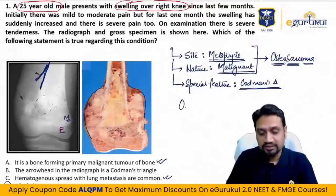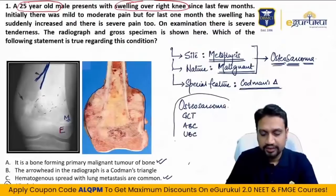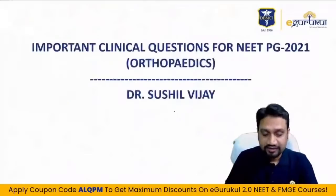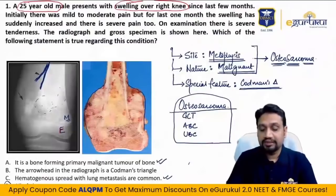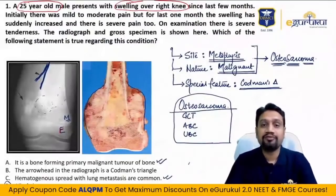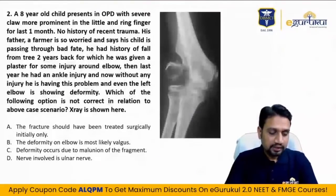From a tumor perspective, you must revise osteosarcoma, giant cell tumor (GCT), aneurysmal bone cyst (ABC), and unicameral bone cyst (UBC) before your examination. GCT, ABC, and UBC have been frequently asked in all prime examinations in the last few years — you must know every detail about them.